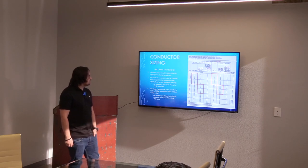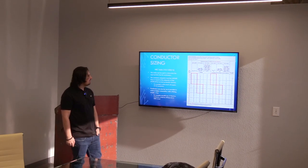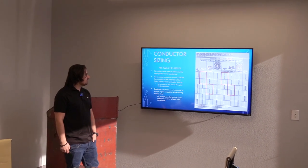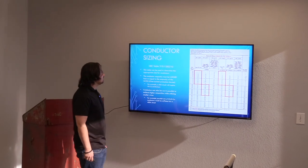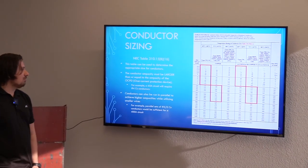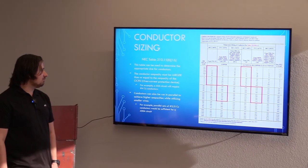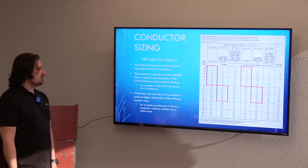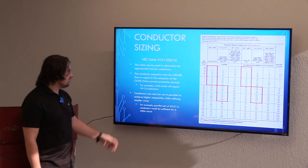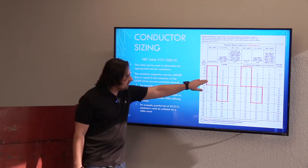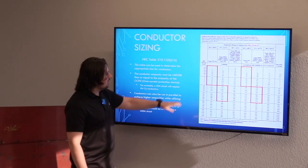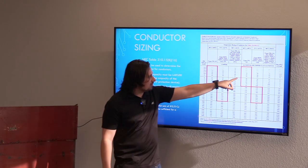Conductor sizing uses NEC table 310.15B16, which you should have in your packet. This table is used for determining the appropriate size for your conductors — you want your conductor ampacity to be larger than or equal to the ampacity of the overcurrent protection device. For a 60-amp circuit, the value falls between two entries, so we go to the next largest, which is a number four. Copper is on the left side and aluminum or copper-clad aluminum is on the right.